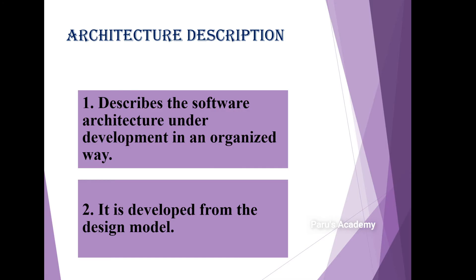The second engineering artifact is architecture description. It describes the software architecture under development in an organized way. This means it covers what the architecture of the software product is, how the software product should look, and what the structure of the software product is. It is developed from the design model.